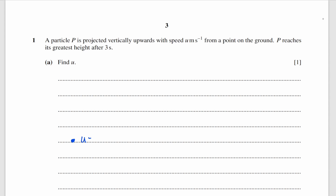We start from the ground and we'll have to find the initial velocity u. We know that after three seconds the particle is going to reach the greatest height, so t equals three seconds. At the highest point, velocity equals zero. So we can use the SUVAT equation v equals u plus at.